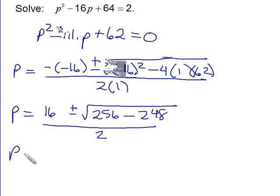So simplifying again, we have 16 plus or minus the square root of 256 minus 248, which is 8, all being divided by 2.